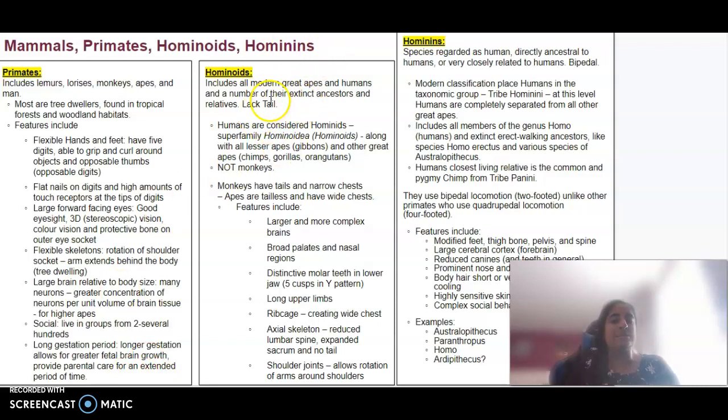A hominid is basically all modern and great apes and humans and a number of their extinct ancestors. But the thing about hominids that makes them different from primates is they lack a tail. So humans are considered hominids, along with gibbons, chimps, gorillas, and orangutans. However, a monkey would not be considered a hominid because it has a tail.